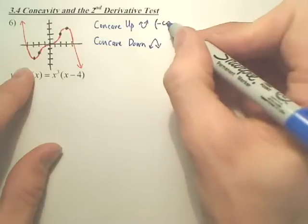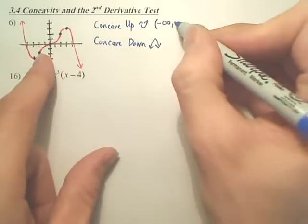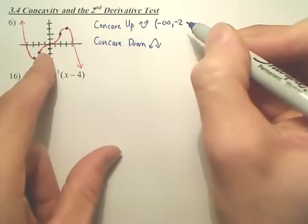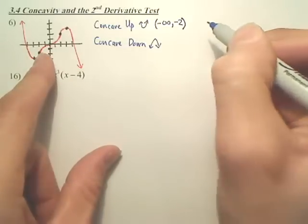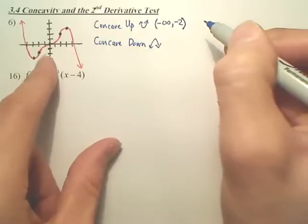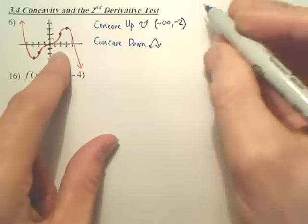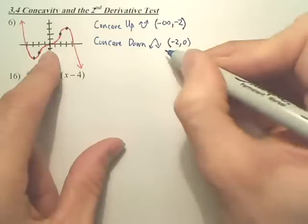So the first interval goes from negative infinity, it's happy, to is that negative 2? It's right there, it's happy. And then from negative 2 to 0, does it look like it's frowning? So we've got from negative 2 to 0, it looks like it's down.